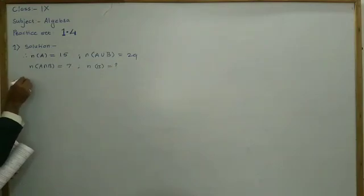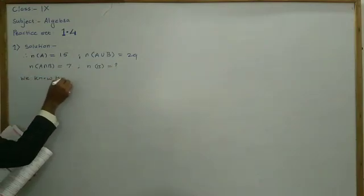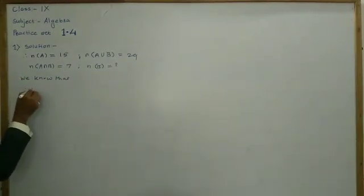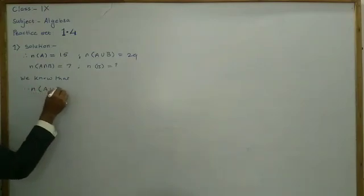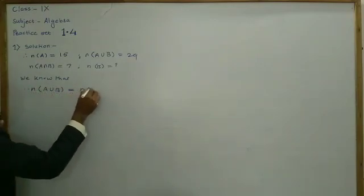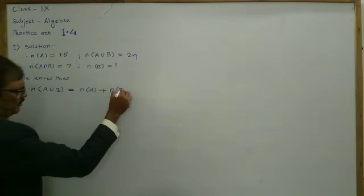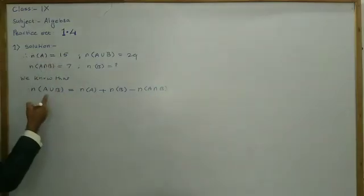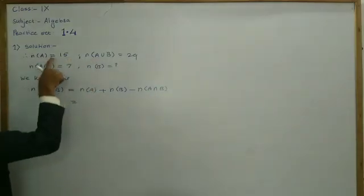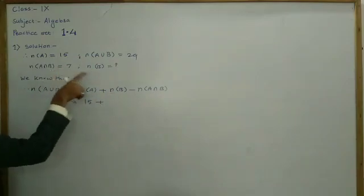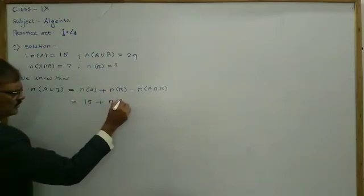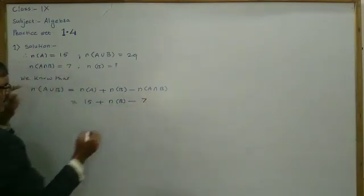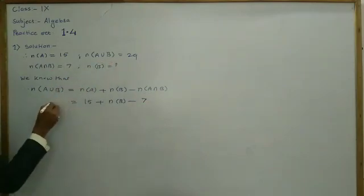So here, we know that the number of elements in A∪B is equal to the number of elements in A, plus the number of elements in B, minus the number of elements in A∩B. So here, n(A) is given, that is 15; n(A∩B) is 7; and n(A∪B) is also given, that is 29.